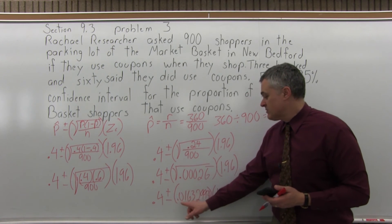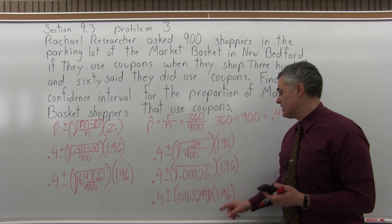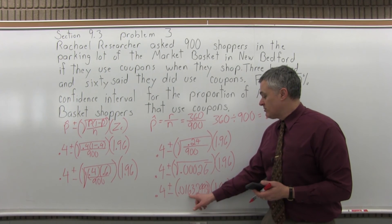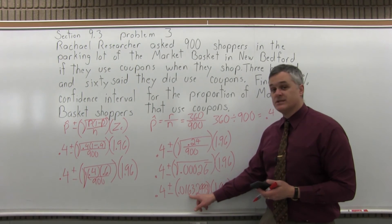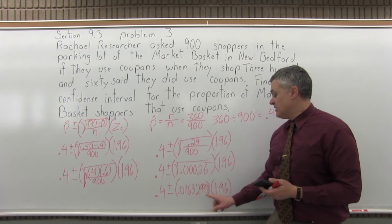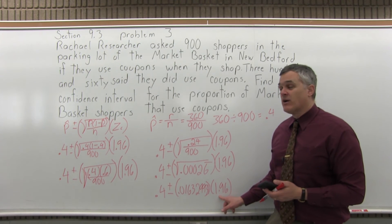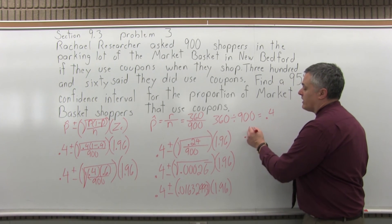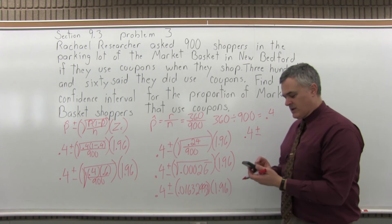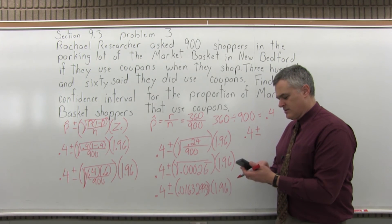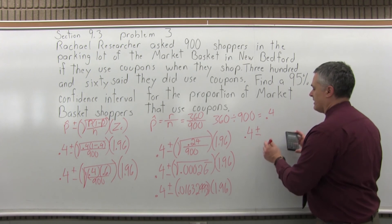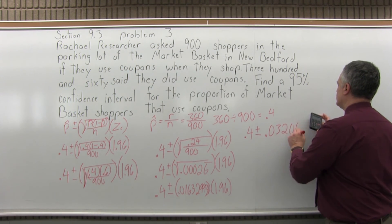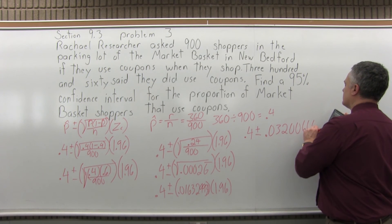So I have 0.4 plus or minus 0.016329931 times 1.96. Now what I can do is multiply this 0.016 number that's on the screen of the calculator times the 1.96, my confidence coefficient. So I'll have 0.4 plus or minus, and when I multiply that, I get 0.032006665.